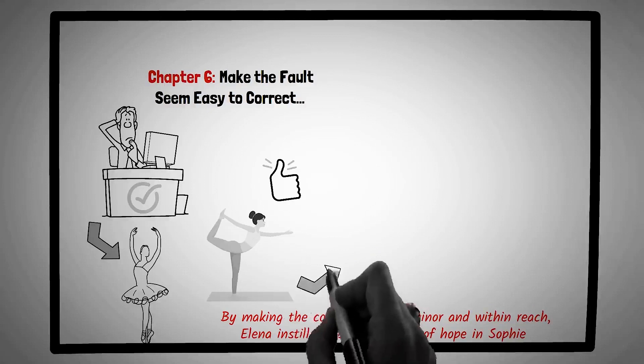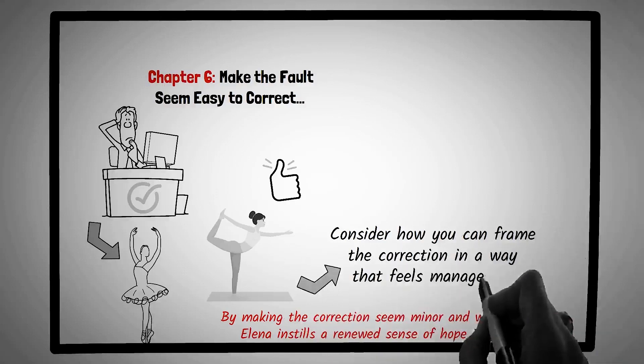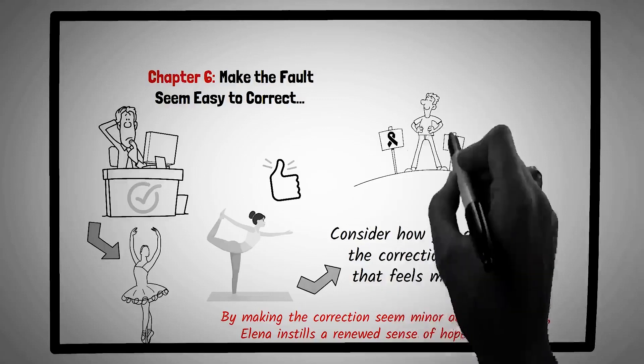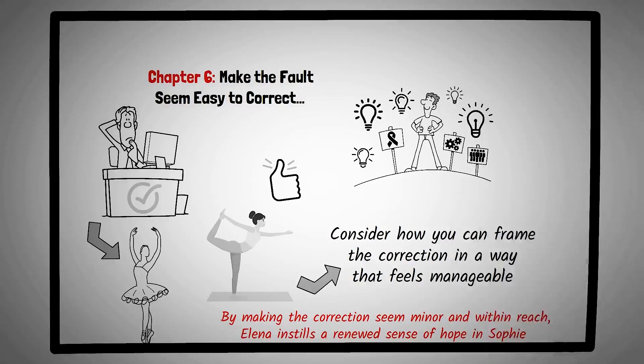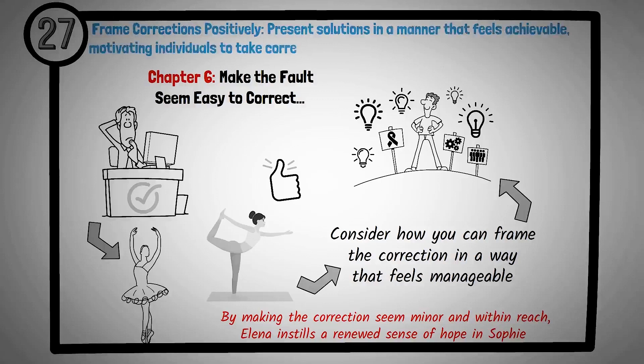When providing feedback or pointing out errors, consider how you can frame the correction in a way that feels manageable. By emphasizing the achievability of the solution, you can motivate and empower individuals to take action and improve. The way we present solutions and corrections can be as impactful as the feedback itself. By making faults seem easy to correct, we foster a can-do attitude, encouraging growth and improvement. Principle number twenty-seven is frame corrections positively. Present solutions in a manner that feels achievable, motivating individuals to take corrective action.